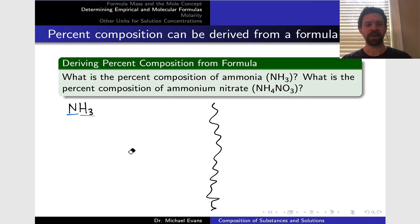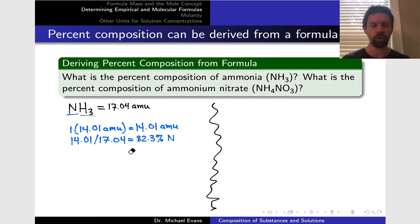Let's start with ammonia, NH3. We begin by calculating the total molar mass for NH3—it's 17.04 AMU. To find the percent mass of each element, we determine the masses of each type of atom. For a single nitrogen, it's 14.01 AMU, which is 82.3% nitrogen. Three hydrogens weigh collectively 3.03 AMU, and dividing by 17.04 gives us 17.7% hydrogen in NH3.